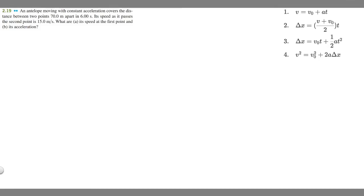In this problem, we're told an antelope moving with a constant acceleration covers the distance between two points, 70 meters apart, in six seconds. Its speed as it passes the second point is 15 meters per second. What are: A, its speed at the first point, and B, its acceleration?